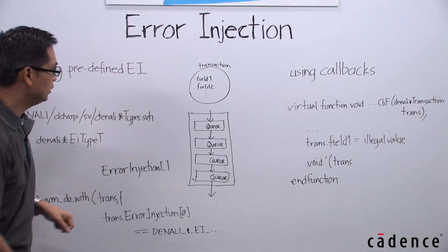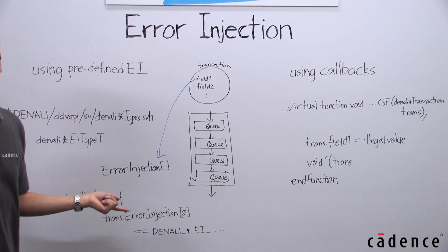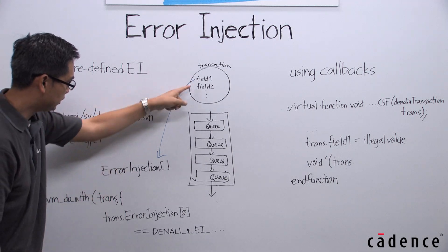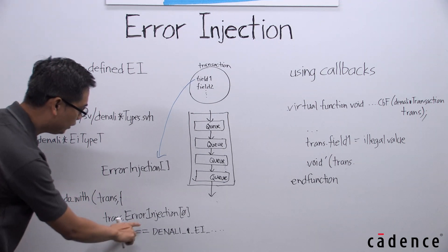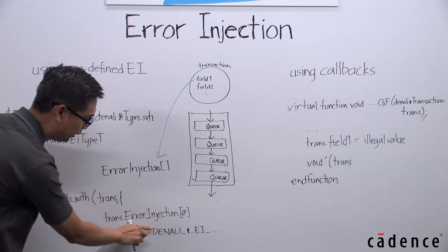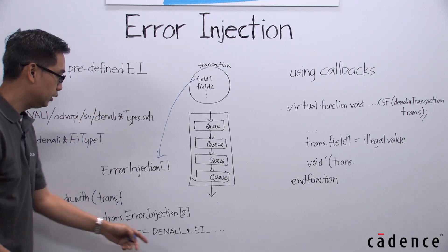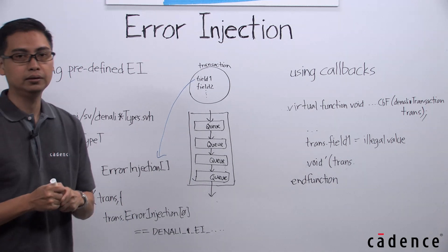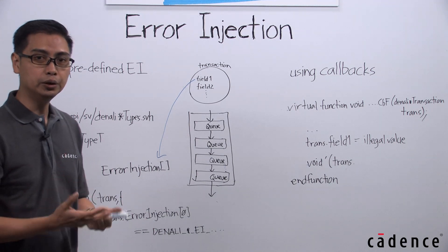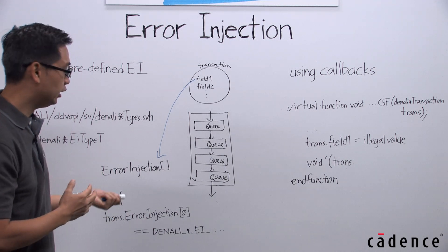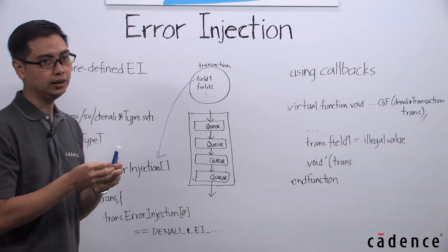To use these predefined EIs, the transaction itself has an error injection array that is a field. So, when you generate that transaction, for example, with uvm_do_with, and then what you can do is constrain your error injection array to that specific EI that you want to do. So, with the error injection added into the error injection array, your VIP will know what kind of error injection that it will do. And then it will, by itself, know which of the relevant fields it will modify so that an error injection will occur.